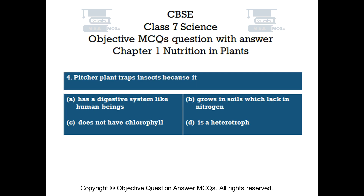Question number 4. Pitcher plant traps insects because it: Option A: has a digestive system like human beings. Option B: grows in soils which lack in nitrogen. Option C: does not have chlorophyll. Option D: is a heterotroph.